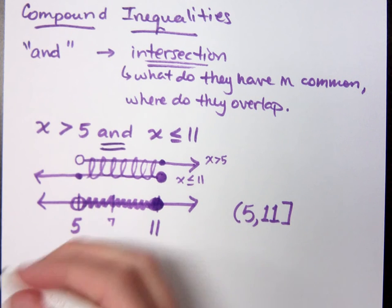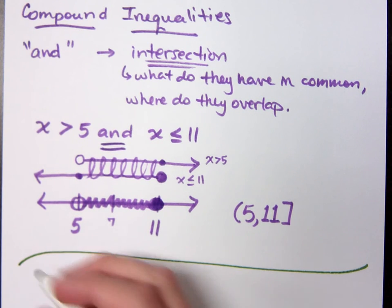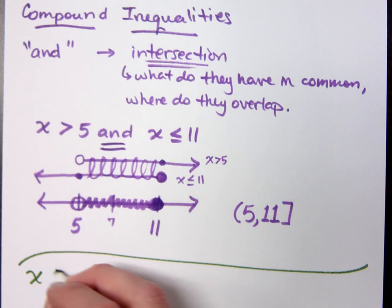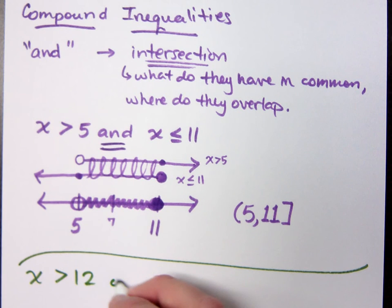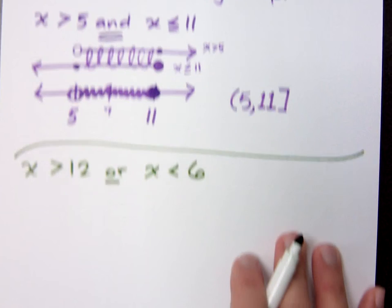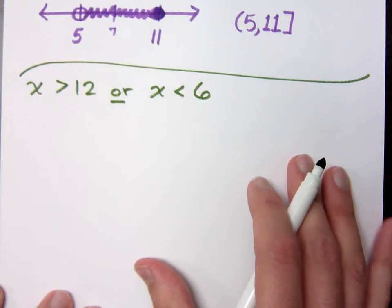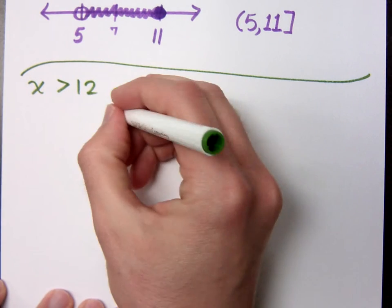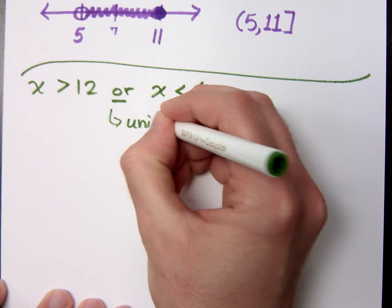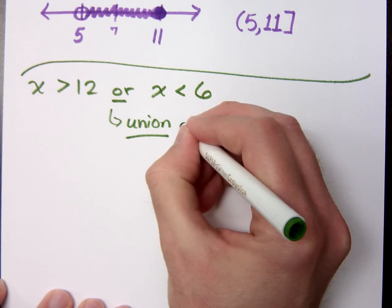Well, what if we change the restrictions and we say the word 'or'? If I say x is greater than 12 or x is less than 6. 'Or' means something entirely different. 'Or' means a union.